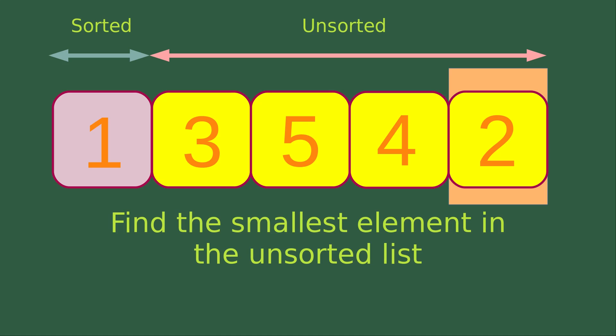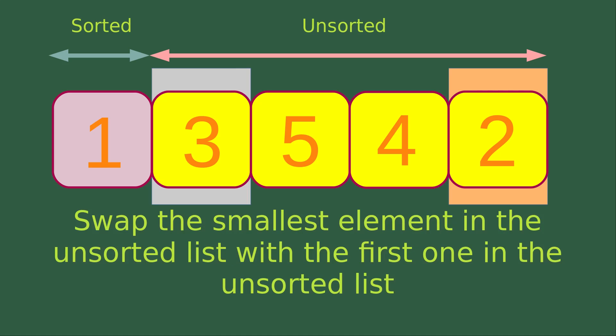I'm going to find out the smallest element in the unsorted list, which is equal to element with number two. We can see that the pink arrow is going to give you the range of the unsorted list. So I simply pick up the smallest number in this range, which is equal to the element with number two. Now I would like to swap the element with number two to the very first element in the unsorted list, which is simply the element with number three.